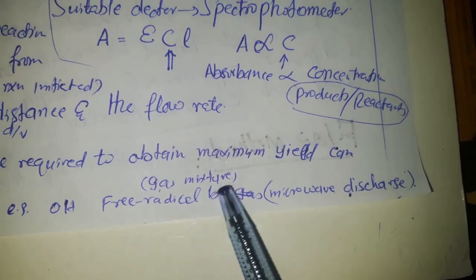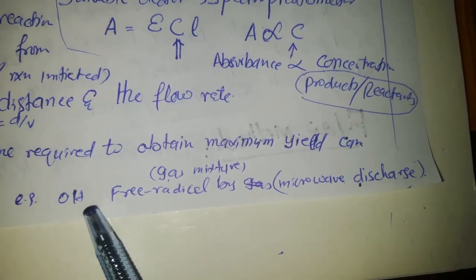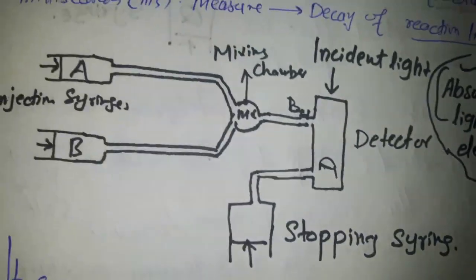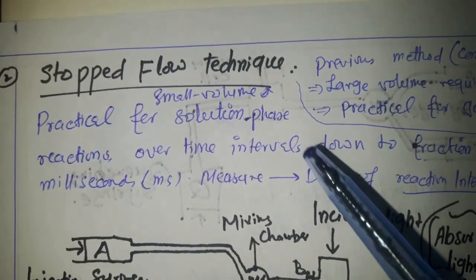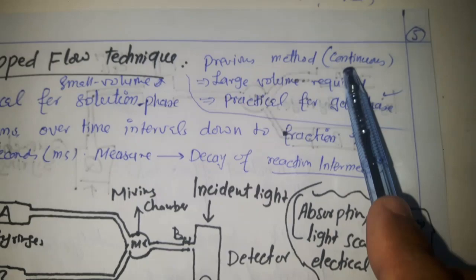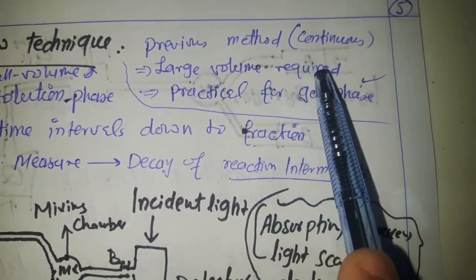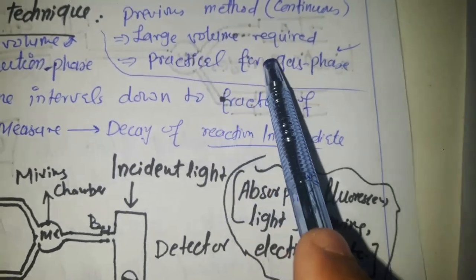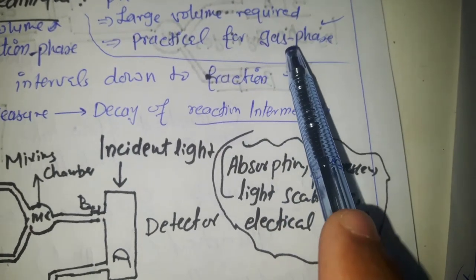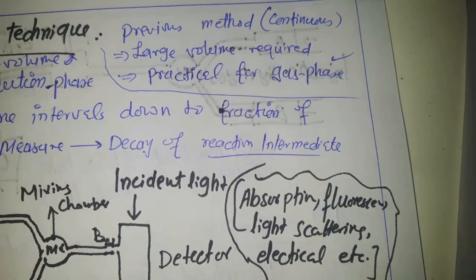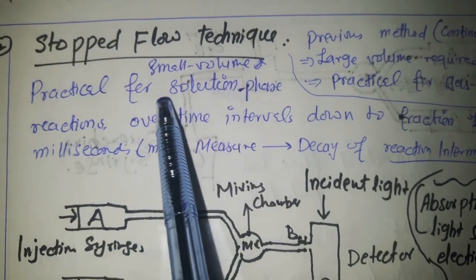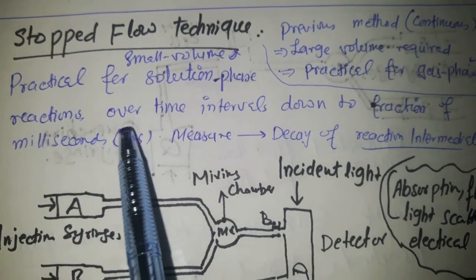By varying the distance, a maximum absorbance signal depending on the distance can be obtained. For gas-phase mixtures, reactive species such as hydroxyl free radicals can be generated by microwave discharge. However, the continuous flow technique requires a large volume of sample, so if only a small volume is available, we have a problem. That is why continuous flow is more practical for gas-phase reactions.